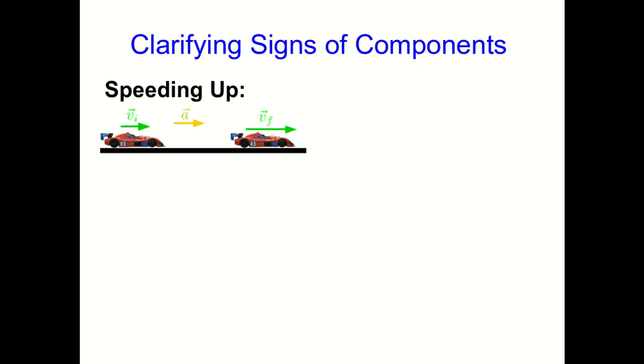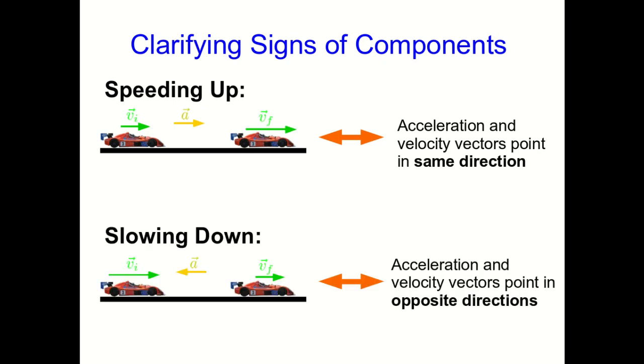First of all, remember, acceleration is a vector. It doesn't even make sense to talk about it as positive or negative, but you can talk about its components as positive or negative. What we can say is that when something is speeding up, its acceleration and velocity vectors point in the same direction. And when it's slowing down, its acceleration and velocity vectors point in opposite directions.